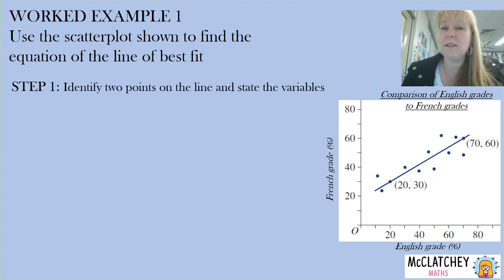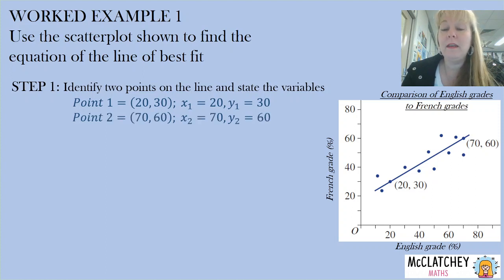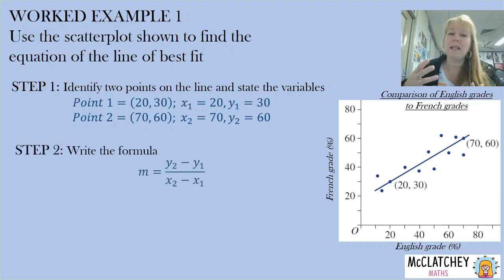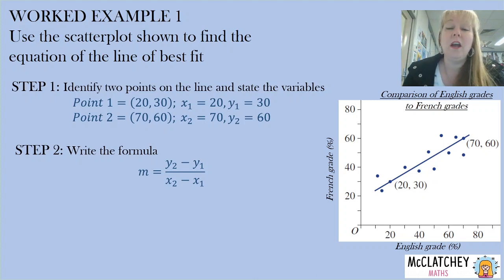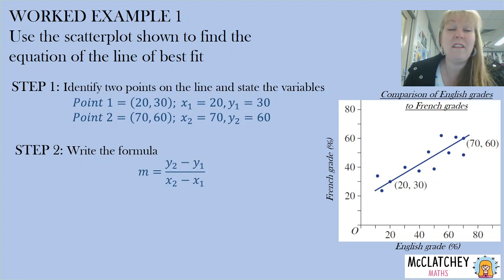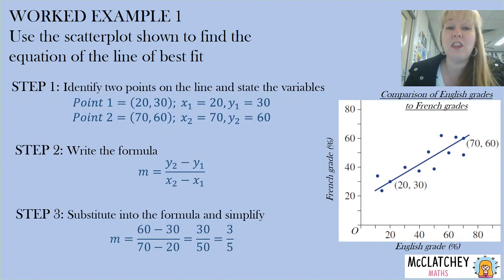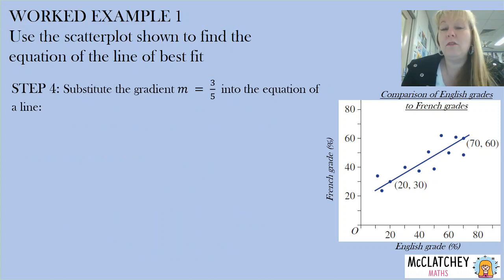I always say to students: label your points with x₁y₁ and x₂y₂, or state what your variables are. A lot of people make the mistake of mixing up coordinates — taking a y-coordinate with the wrong x-coordinate — and end up with a gradient with the wrong sign or things back to front. Label your points first, then substitute that information into the gradient formula. We get a gradient equal to three-fifths.